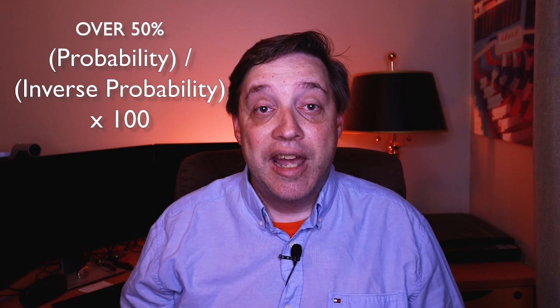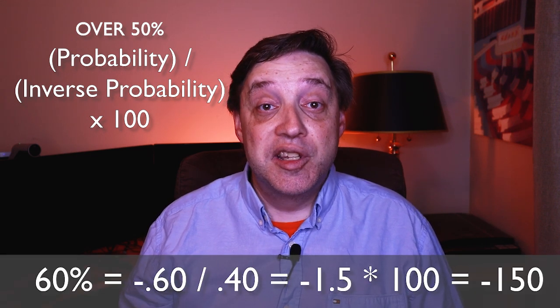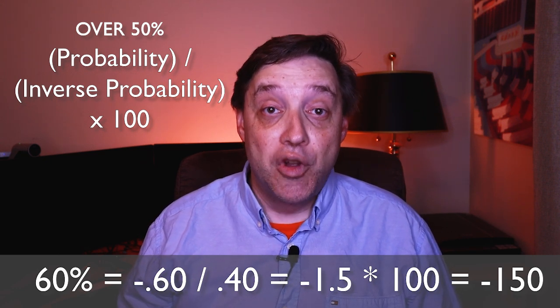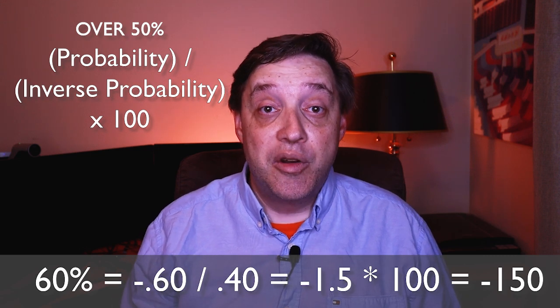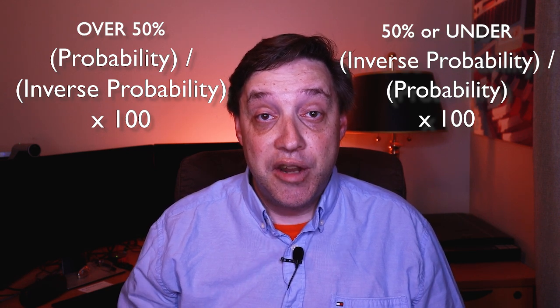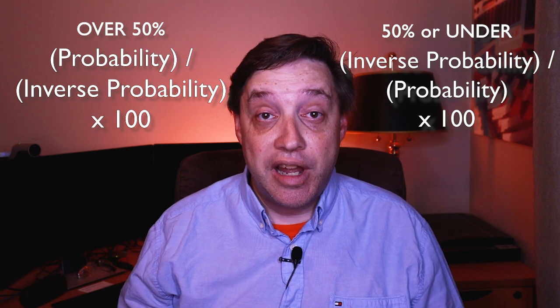Now to go from probability back to American odds, we again have two formulas. It matters whether the probability is north of 50% or it's 50% or less. If it's over 50%, we add back in that minus sign and we divide the probability by the inverse probability, then multiply that result by 100. For instance, if we had 60%, we would take minus 60% divided by 40%, and we would get minus 1.5. Multiply that by 100, you get minus 150.